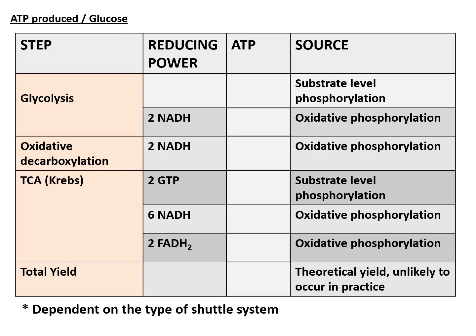Now let's calculate the total number of ATPs produced per glucose molecule. In glycolysis, the net gain is two ATPs — we invest two ATPs and harvest four, giving a net of two. We also get two NADH from glycolysis. From these two NADH, we can get either four or six ATPs depending on the type of shuttle system used.